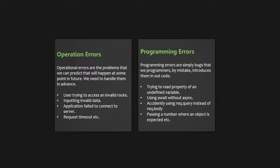There are two types of errors that can happen in your Express app: operation errors and programming errors. Operational errors are problems that we can predict will happen at some point in the future, so we need to handle them in advance. Operational errors have nothing to do with bugs in our code — instead, they depend on the user, the system, or the network.